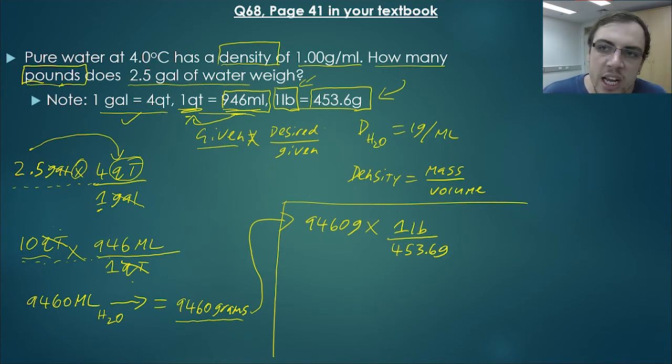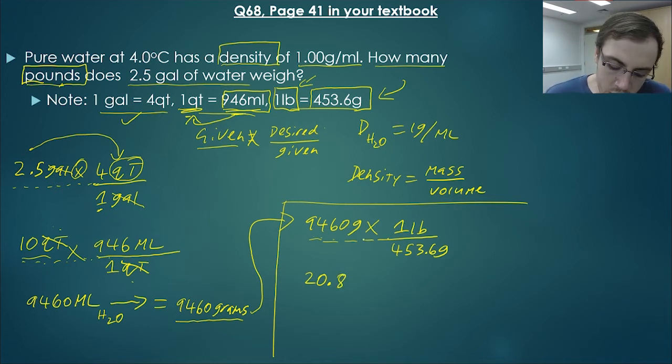This is where it changes a little bit from the previous ones that we've done. 9,460 times 1 is 9,460. However, it is divided by 453.6 grams. So 9,460 divided by 453.6 is equal to 20.8. Now we look at our units because we've got grams on the top and we've got grams on the bottom. So these two cancel and that gives us 20.8 pounds.